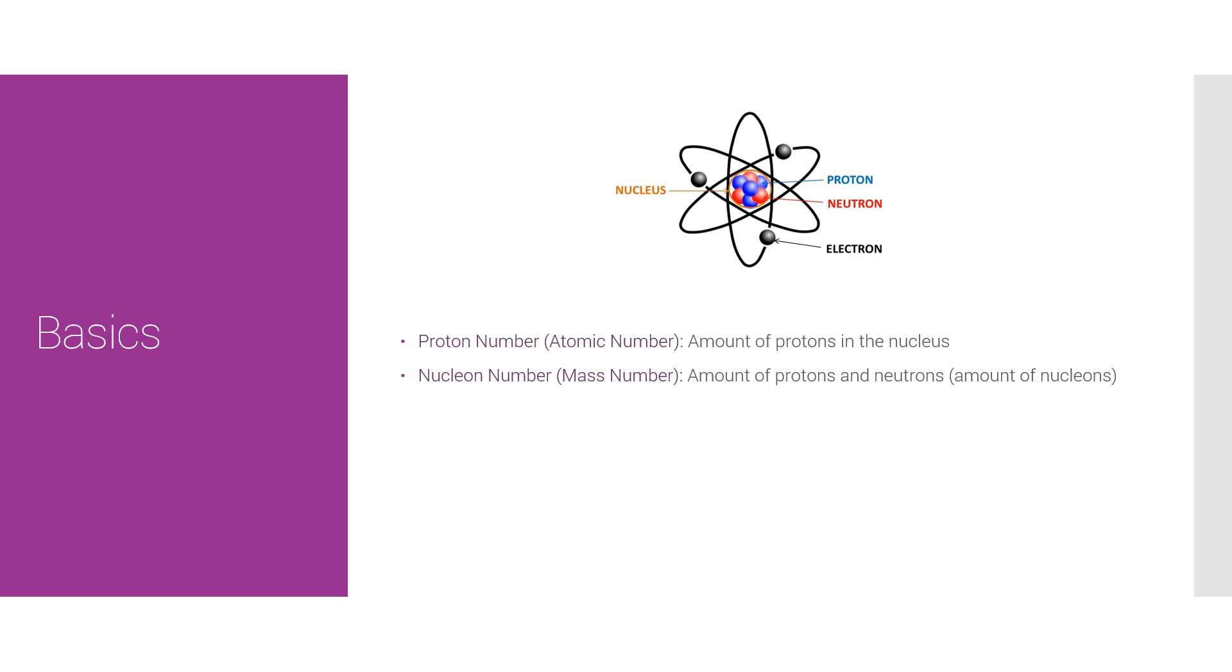The nucleon number, also the mass number, is the amount of protons and neutrons, the amount of nucleons inside the atom.